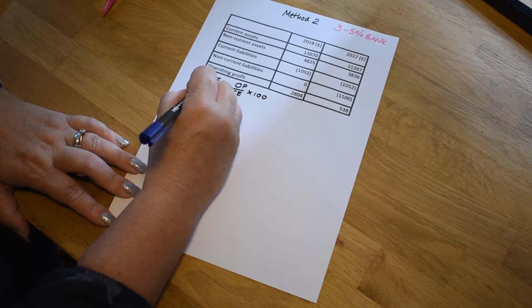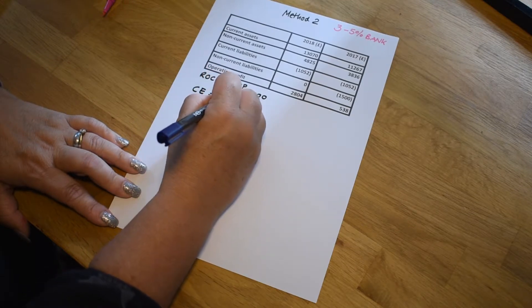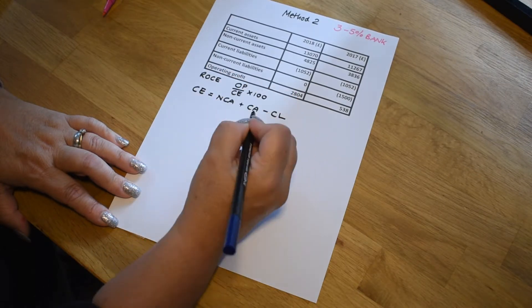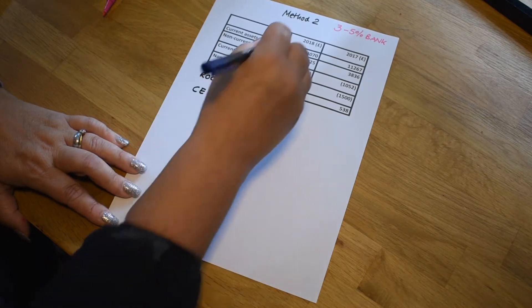And in this circumstance, we're going to use capital employed equals non-current assets plus current assets minus any current liabilities that the business has. So let's go ahead and substitute that into the formula.